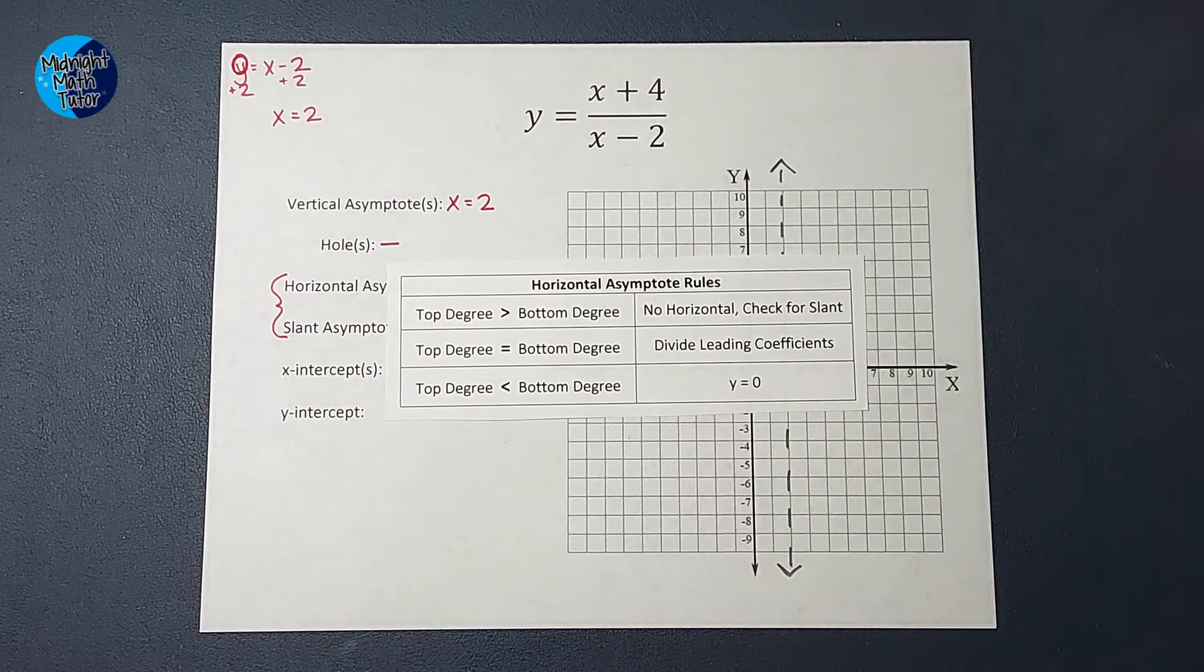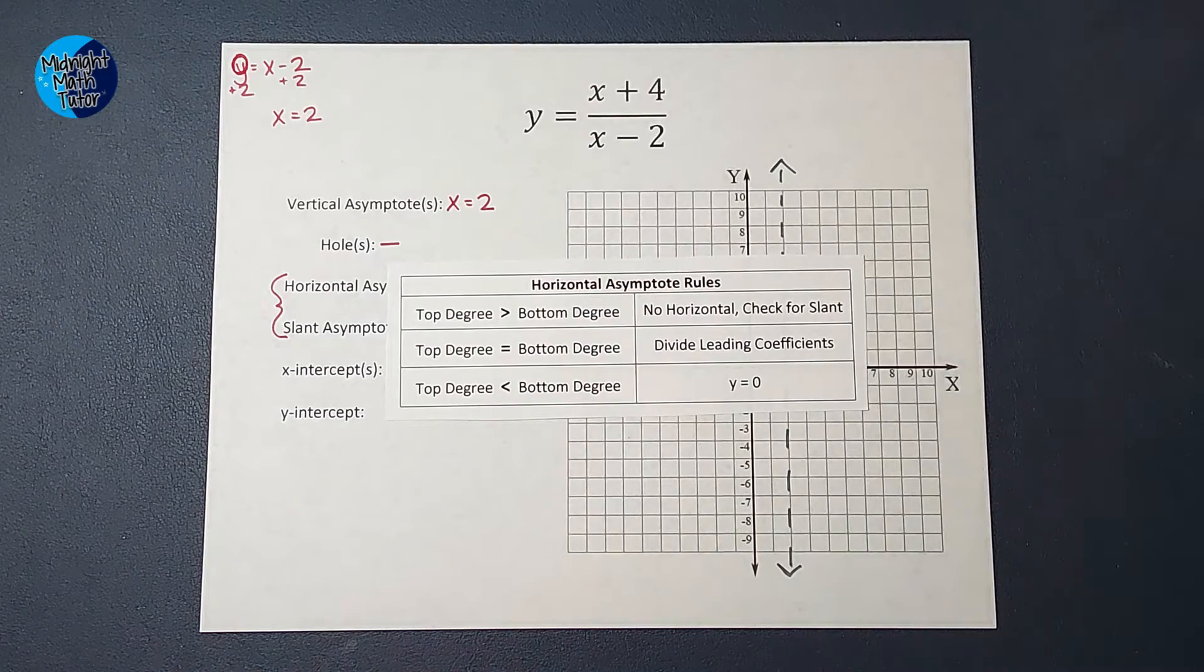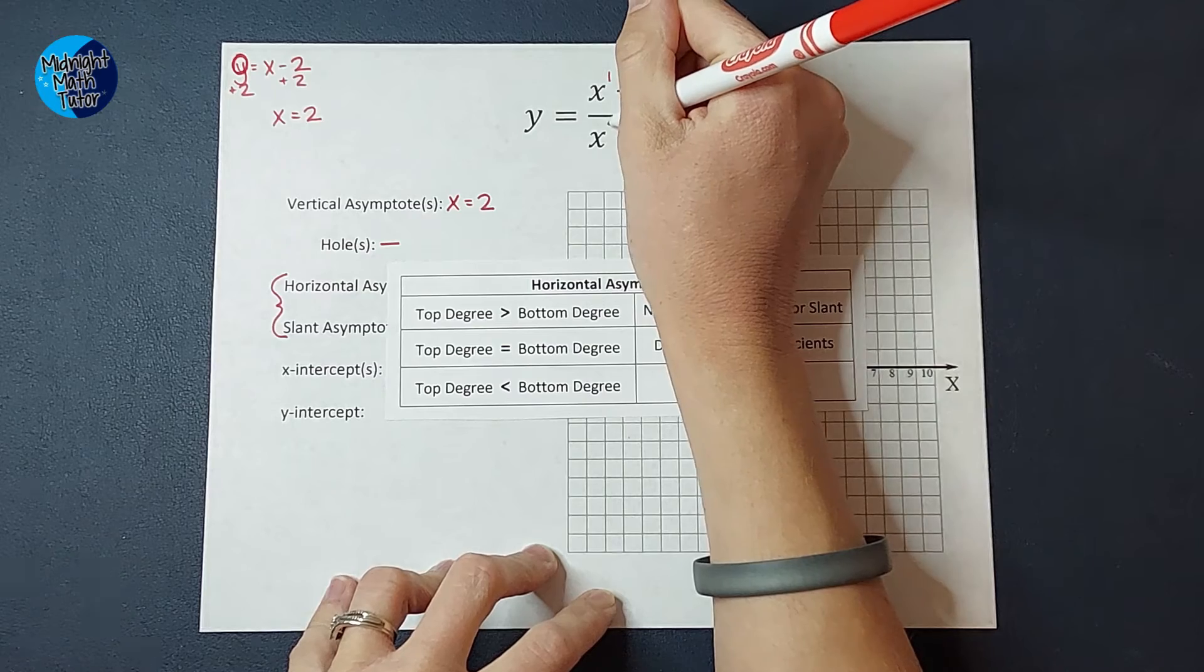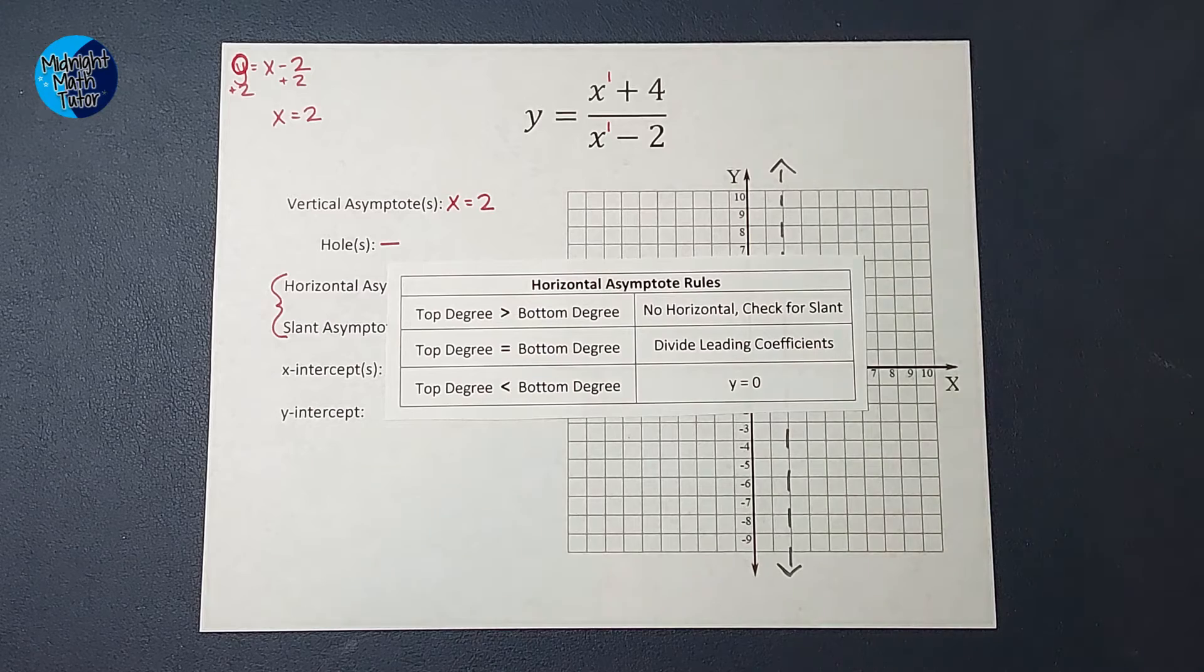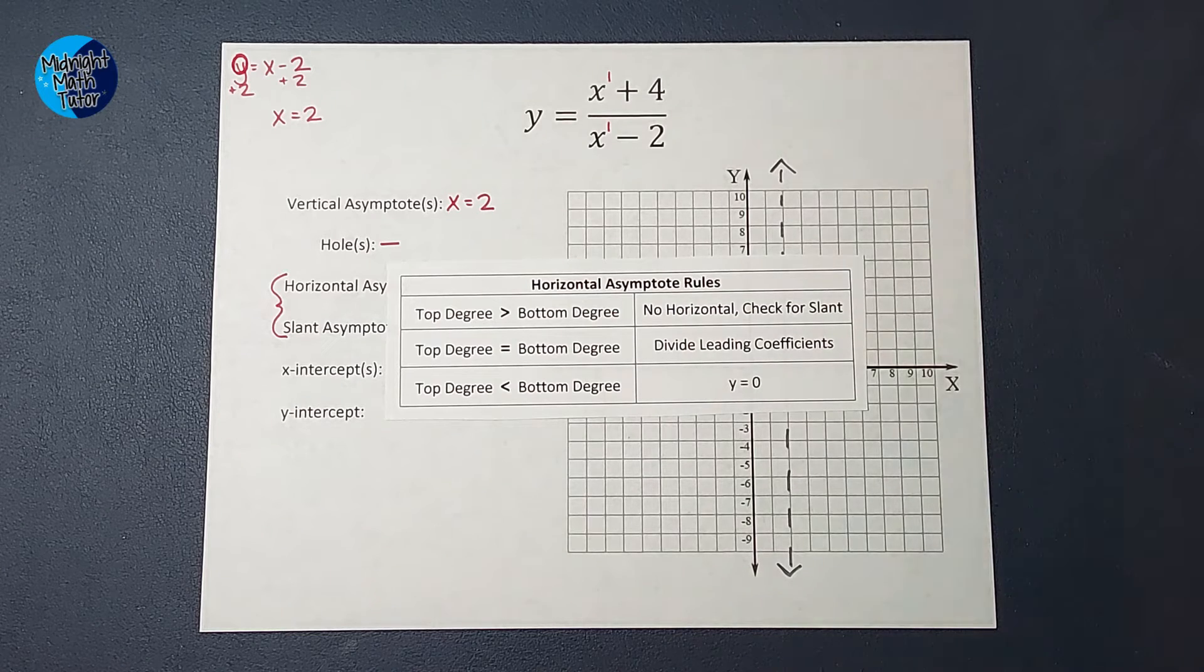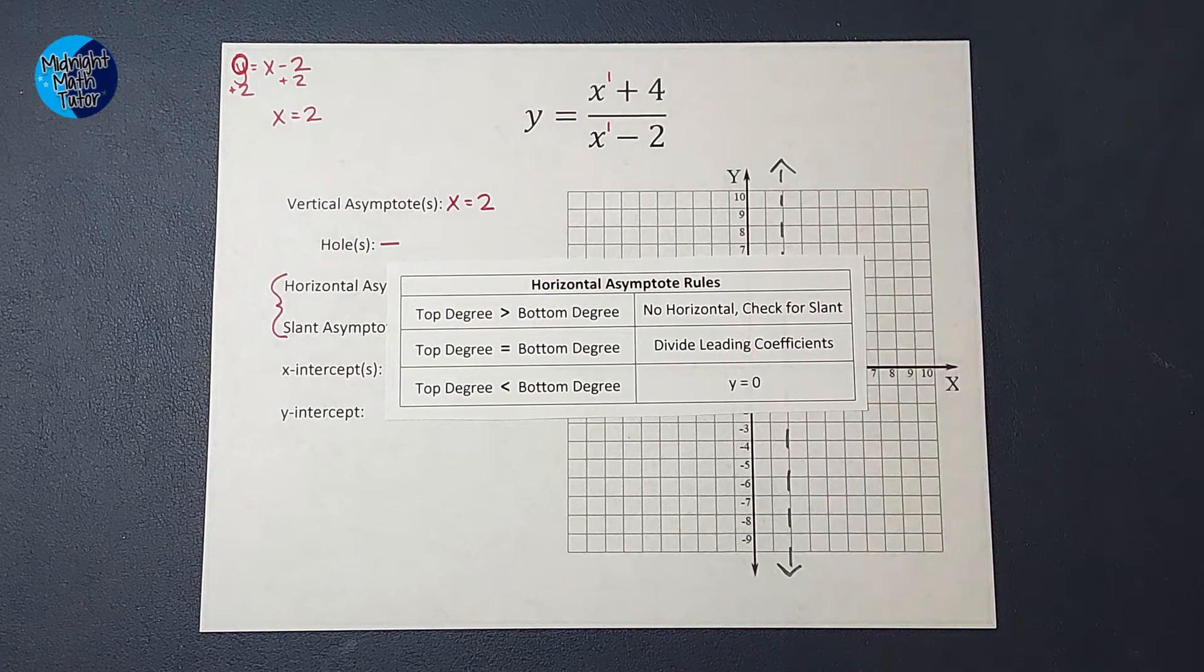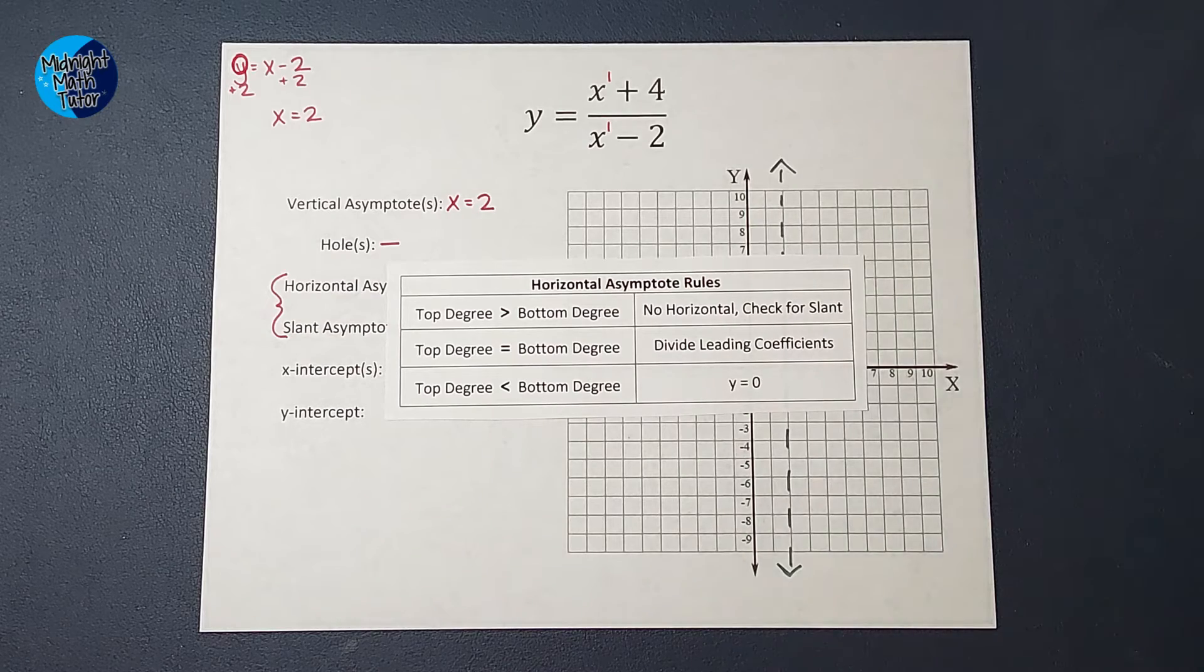A degree is the highest exponent on the top and bottom. Now, if you're looking at this and you're like, I see exactly zero exponents. Well, remember when you have a variable that doesn't have an exponent, it really has a one that we just don't write. So this is really x to the first plus four and x to the first minus two. Now when we look at these, if the top degree is bigger than the bottom, there's no horizontal asymptote. We check for a slant by using long division. If the top degree and bottom degree are equal, like this one, one and one, then we divide our leading coefficients. If your top is less than the bottom, then your horizontal asymptote is y equals zero.